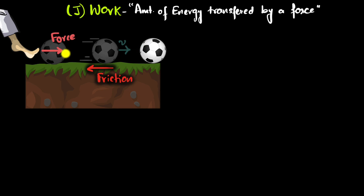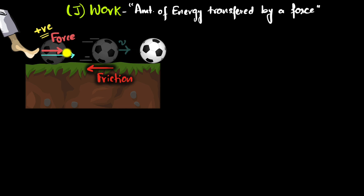Why did the forces have opposite effects? When we kick the ball, the force is in the same direction as the motion. Whenever a force acts in the same direction as motion, it transfers energy into the object — we say it does positive work. But friction acts in the opposite direction, slowing the object down. Whenever a force acts in the opposite direction of motion, it removes energy from the object — we say it does negative work. So the kicking force did positive work; friction did negative work.